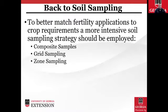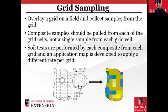To better address this, we start looking at matching fertility applications to crop requirements through a more intensive soil sampling strategy. There are three ways to do it: composite samples from the field — if we're not doing this, we really need to start, as a single point sample is not doing us any good; grid soil sampling; and zone sampling. For grid sampling, we simply overlay a grid on the field and collect composite samples from each grid cell — pulling anywhere from five to ten samples from each grid, aggregating those in a bucket, and sending that off for soil testing.